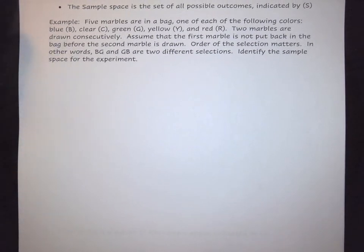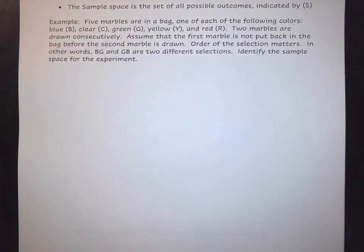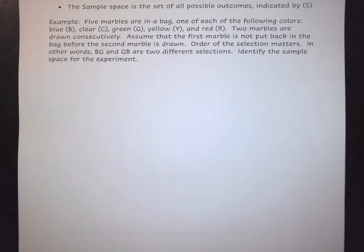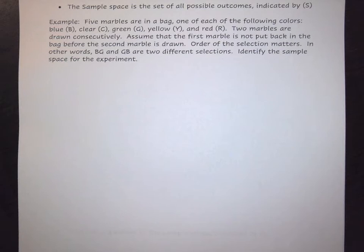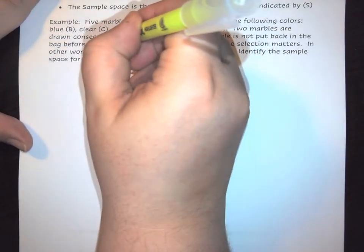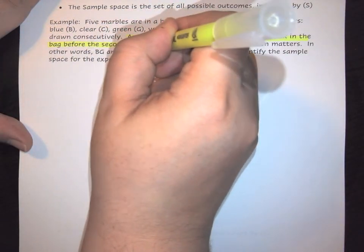A sample space is a set of all potential possible outcomes indicated by your set of information. In this problem, we have five marbles in a bag, one of each of the following colors: blue, clear, green, yellow, and red. Two marbles are drawn consecutively, assuming that the first marble is not put back in the bag before the second marble is drawn.